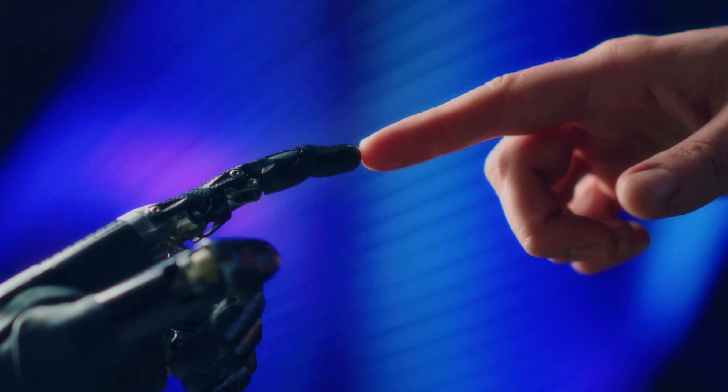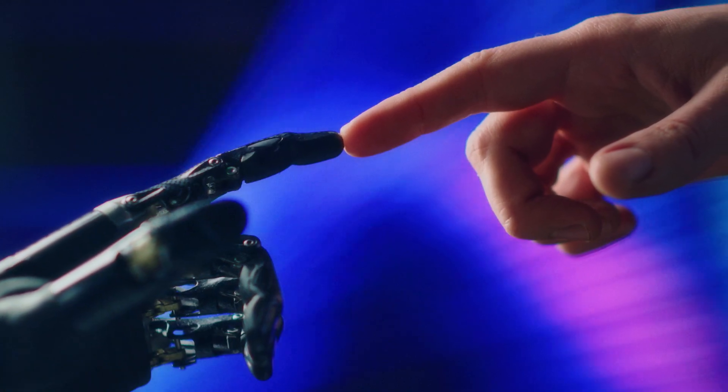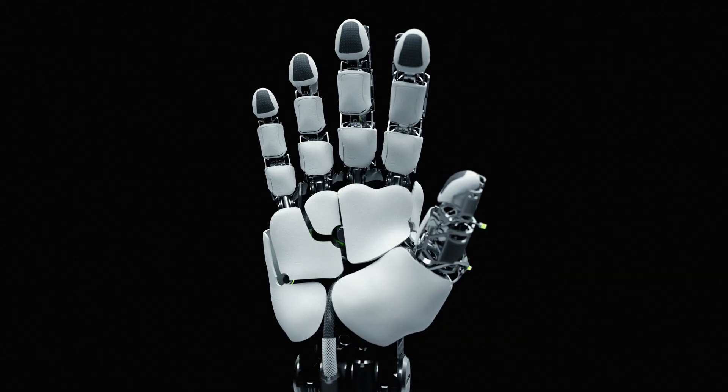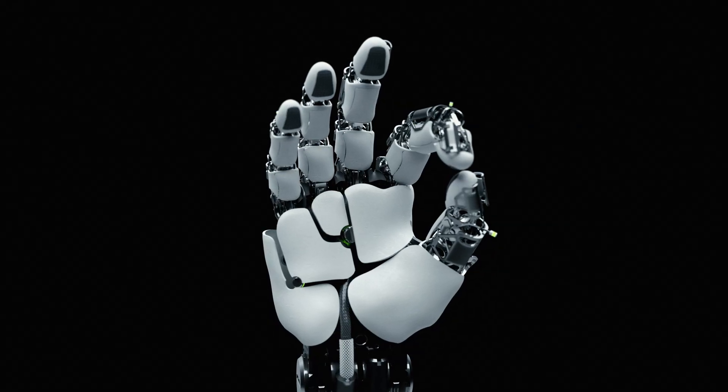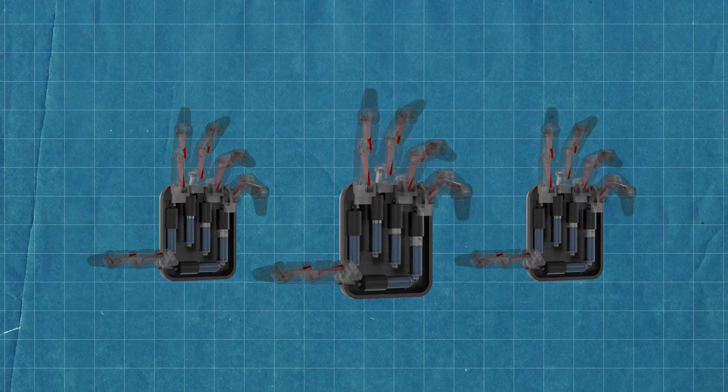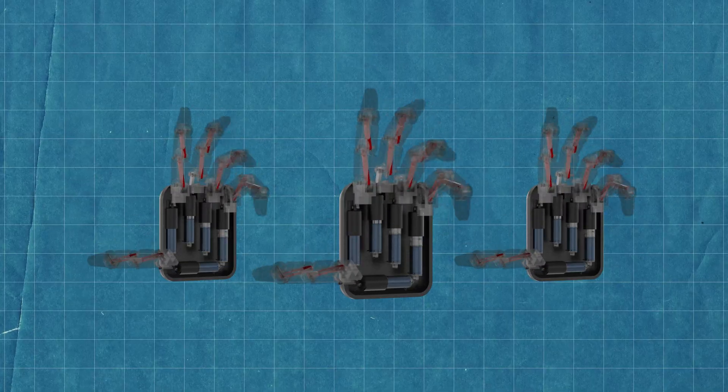And the same idea applies to actuators. Take the hand of a humanoid robot, for example, to move each joint freely. The actuators driving them need to be smaller. Smaller actuators offer better design flexibility and mechanical efficiency.